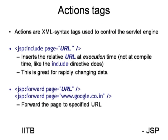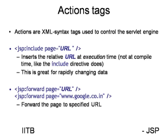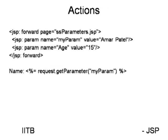The include directive feature can also be achieved using action tags. The action tag starts with 'jsp:'. For including a page, we use 'jsp:include' and specify which page to include as a header. Similarly, if you want to redirect to another page, there is another action tag called 'jsp:forward' — simply mention 'jsp:forward' and the destination page.